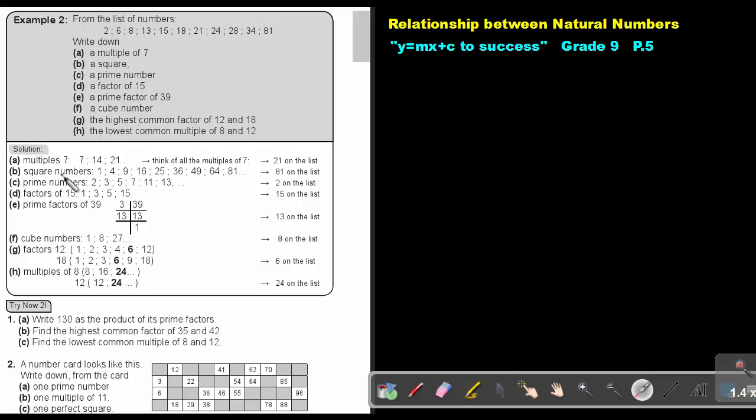The next one: prime factor of 39. First write down the prime factors of 39. That's 3 and 13. Which one is on the list? 30 is on the list.